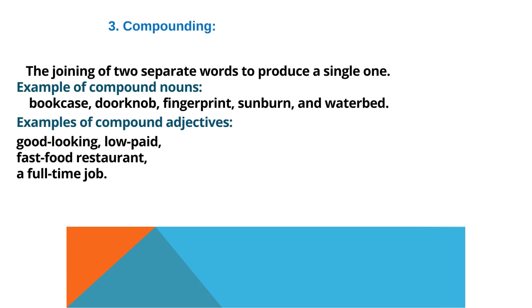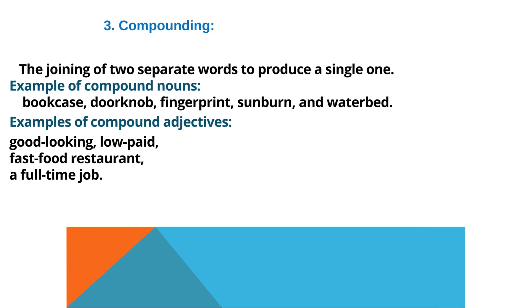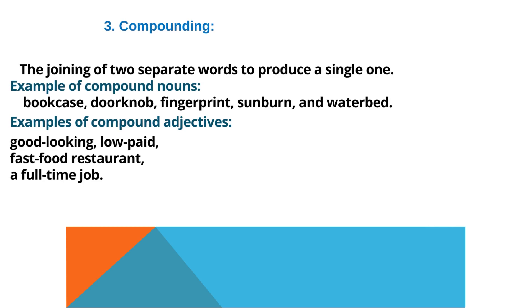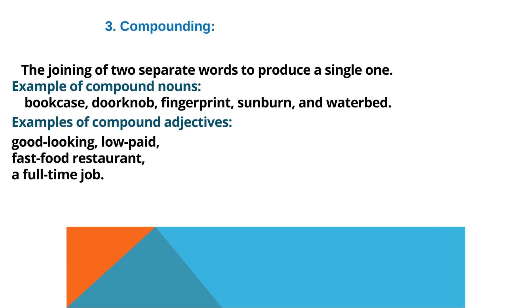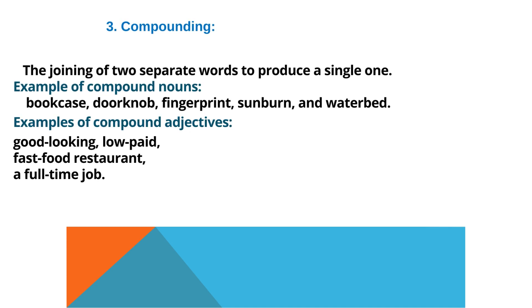Compounding — the joining of two separate words to produce a single one. Examples of compound nouns: bookcase, doorknob, fingerprint, sunburn, and waterbed. Examples of compound adjectives: good-looking, low-paid, fast-food restaurant, a full-time job.